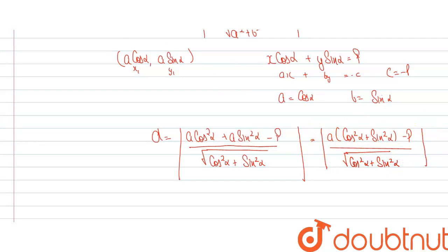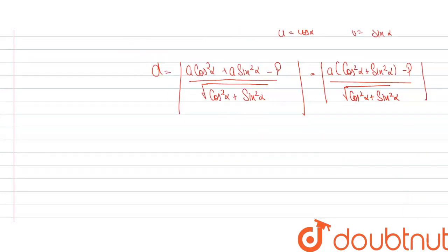Now we know that property of cos square alpha plus sin square alpha is equal to 1. We'll put value of this is equal to 1 and this is equal to 1. So we'll get mod A into 1 minus P divided by 1, which will come out to be A minus P mod.